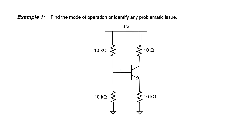Let's look at some examples and identify which mode of operation each of these transistors is in. The first thing I'd like to do in this example is to calculate the base voltage. It's almost a voltage divider, and it would be a perfect voltage divider if it weren't for the base current. Since we have 9 volts and two 10 kilo ohm resistors, I'll assume that we have 4.5 volts at the base of the transistor.